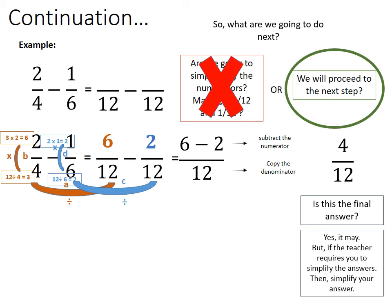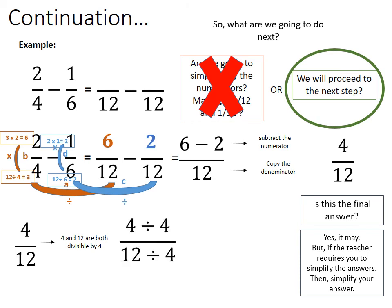Is 4 over 12 the final answer? It may be, but if the teacher requires you to simplify, then simplify. 4 over 12 are both divisible by 4: 4 divided by 4 equals 1, and 12 divided by 4 equals 3. So the simplified final answer is 1 over 3.